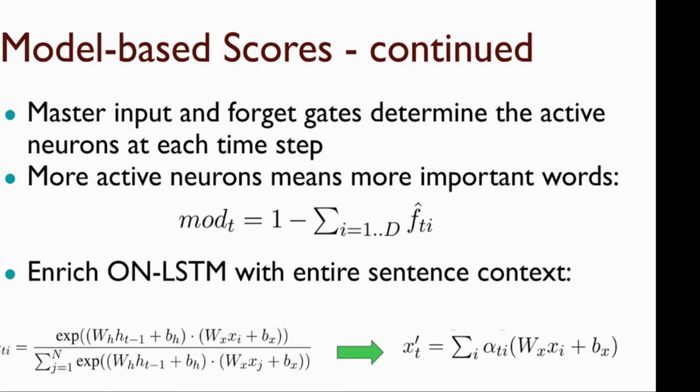However, there is a limitation in the original ON-LSTM. It will infer the master forget or input gates using only the left context of the word. In order to solve this problem, we propose to replace the input vector at different timestamps of the ON-LSTM with a weighted sum of the entire sentence. The attention scores for words are computed based on the similarity between the representations of the word and the hidden state that we have at that timestamp. Using these attention scores, we compute a weighted sum over all words of that sentence and use that weighted sum as the input vector at different timestamps.